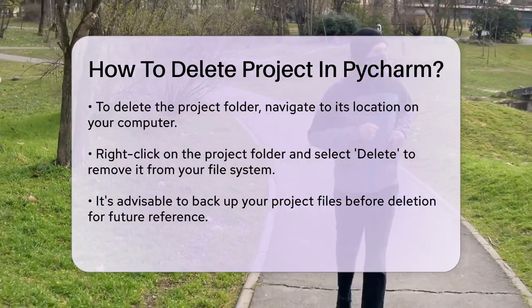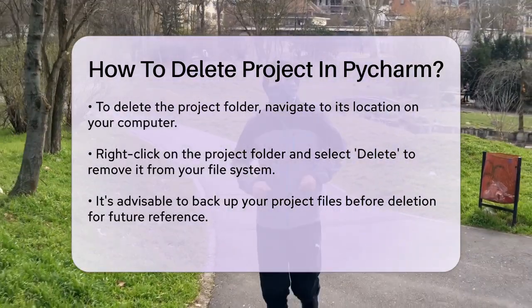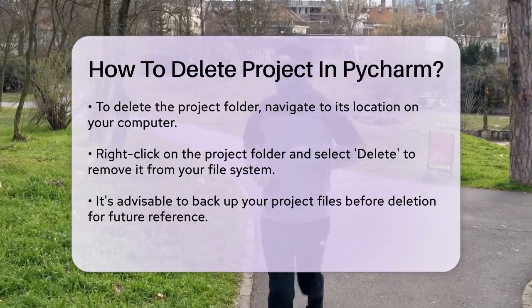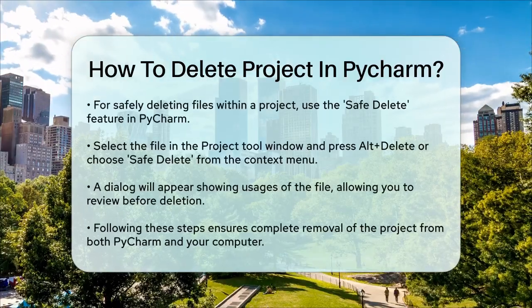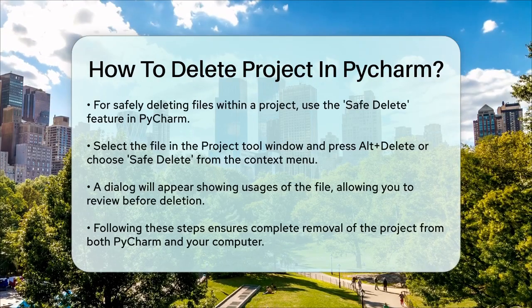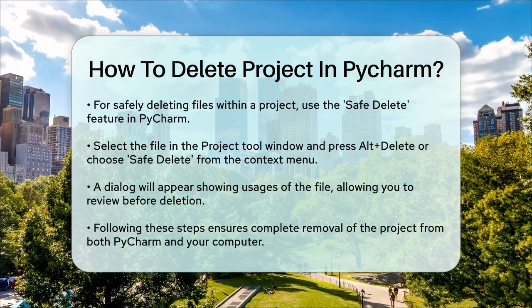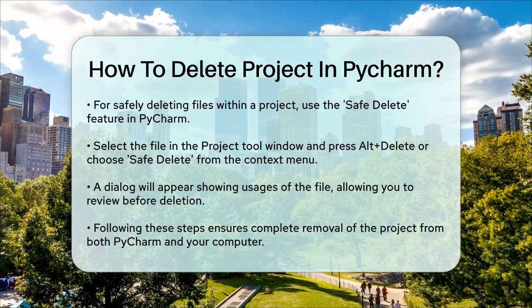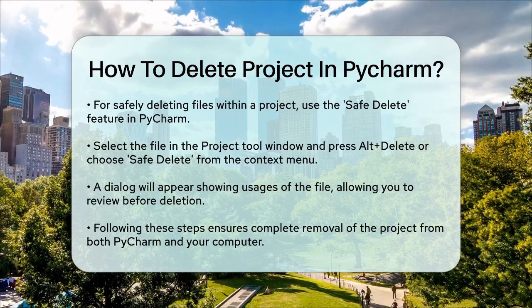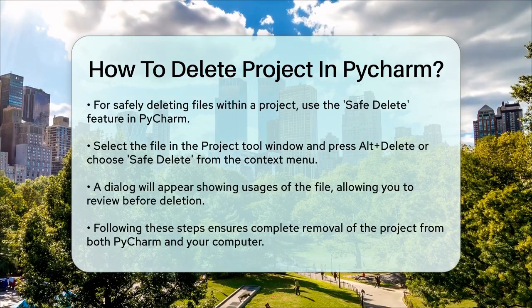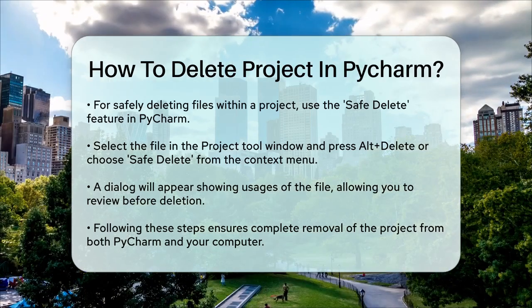If you're dealing with files within a project that you want to delete safely, PyCharm has a Safe Delete feature. This feature checks for any usages of the file you're about to delete and allows you to make necessary corrections before deleting it. To use this, select the file in the Project Tool window, press Alt+Delete, or select Safe Delete from the context menu. This will open a dialog where you can view the usages and decide whether to proceed with the deletion.